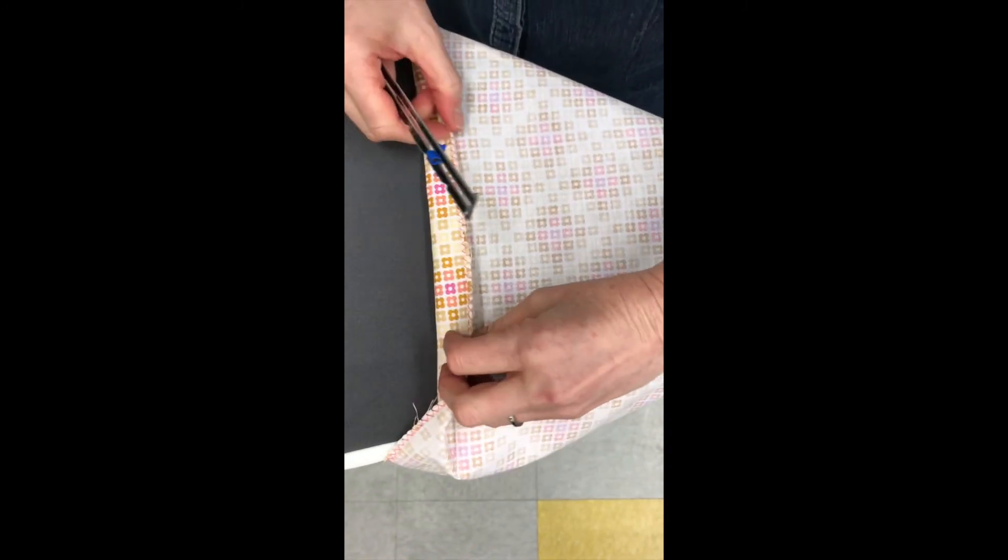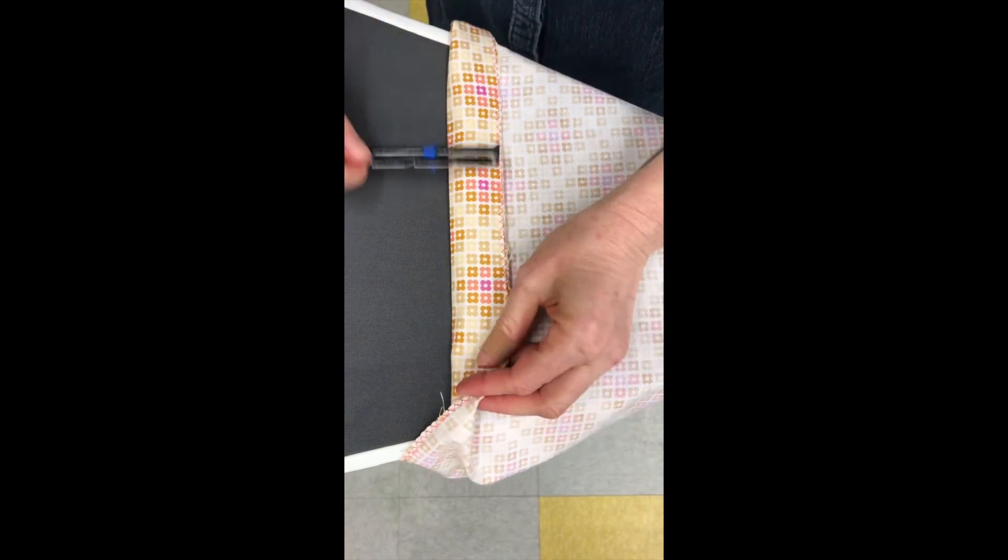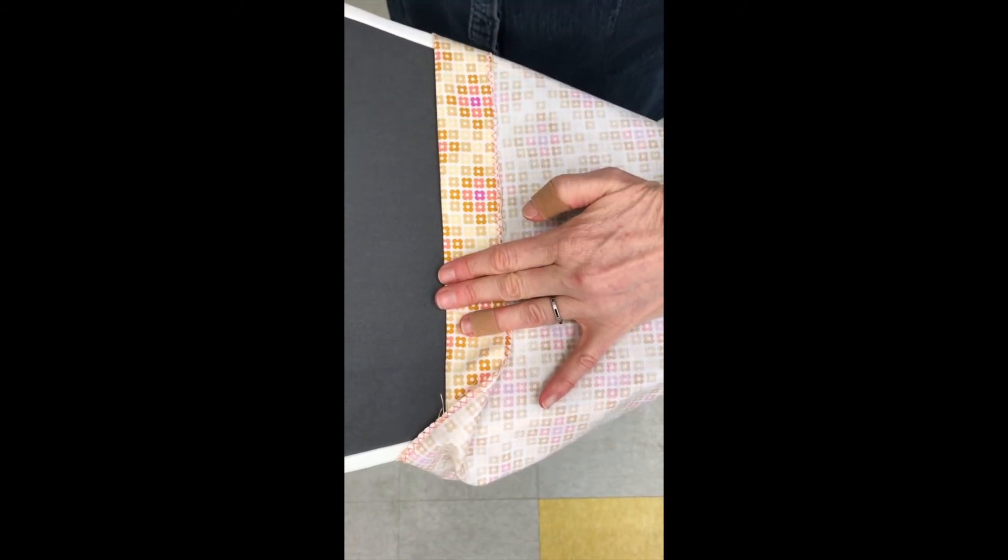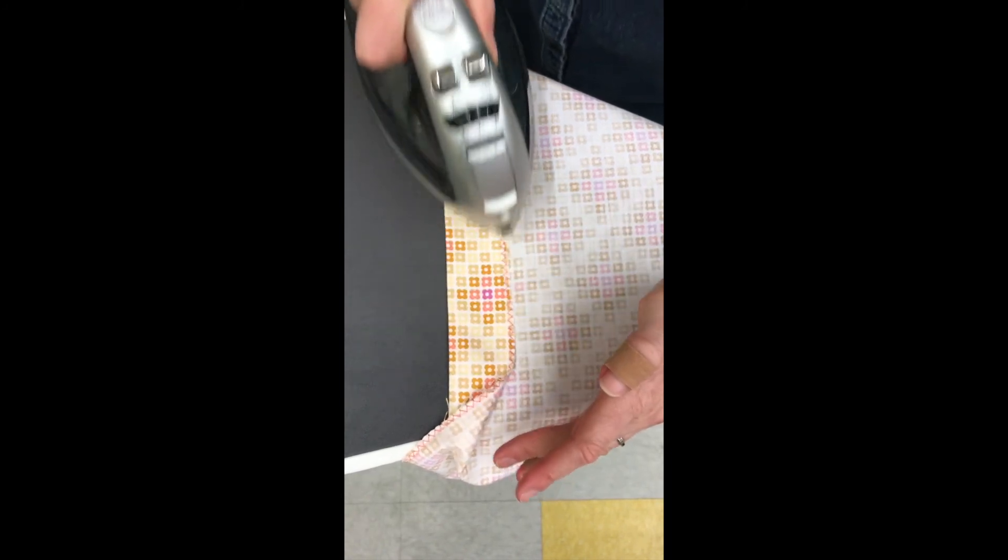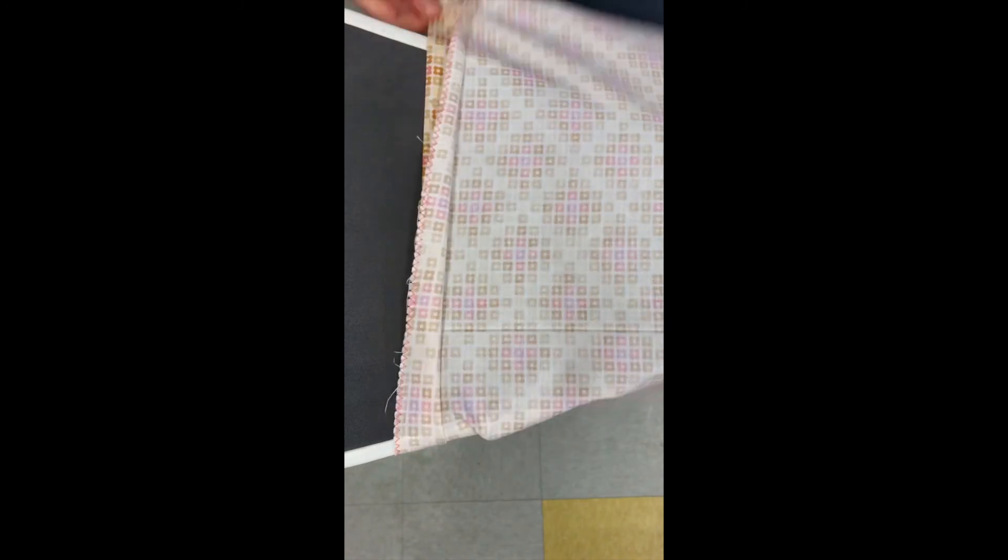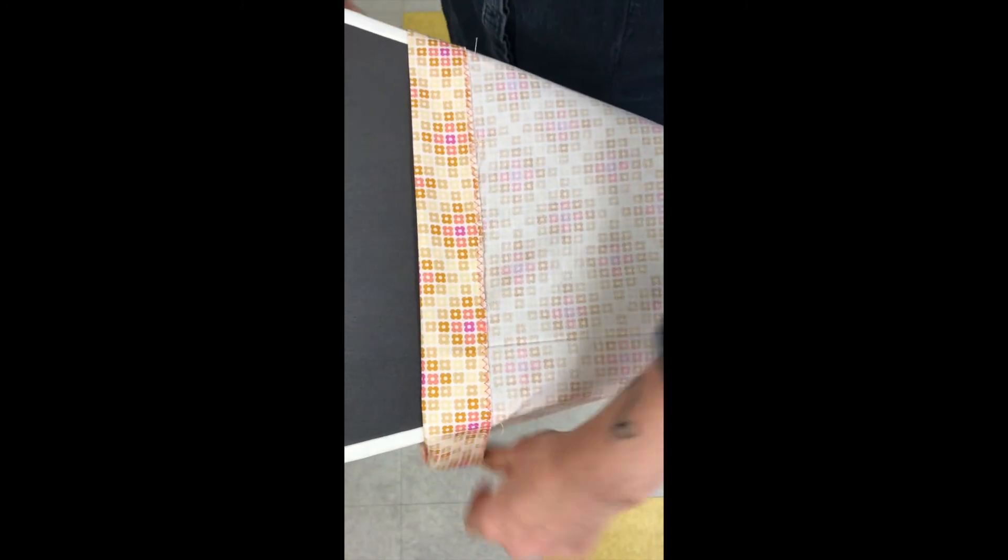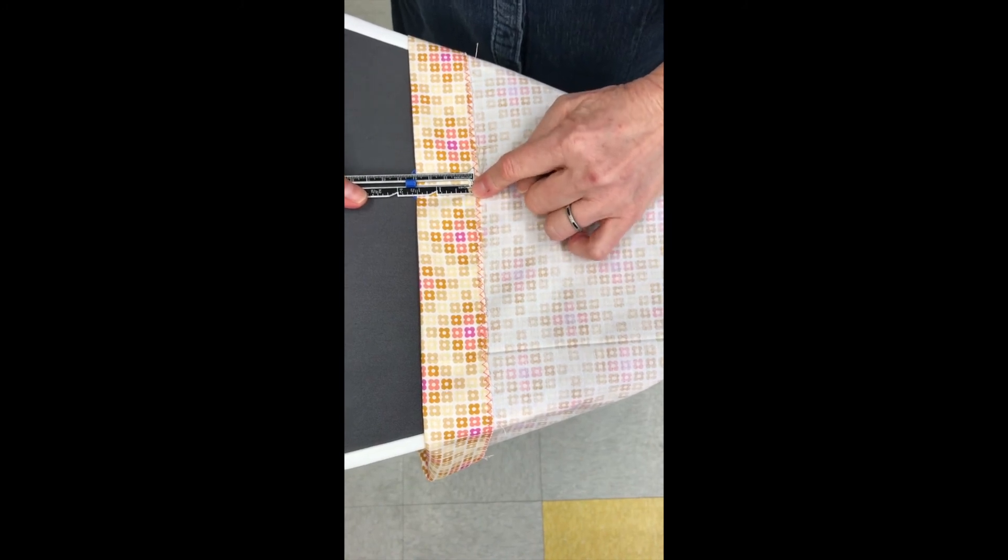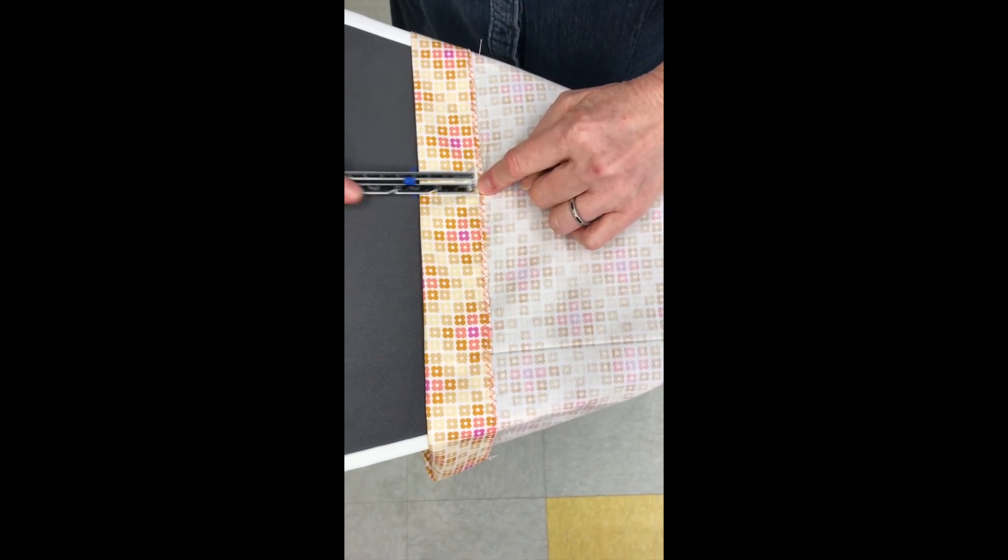So again, I'm going to measure an inch and a half, and I'm going to press, and I'm going to spin. And I'm going to measure press spin all the way around that top edge so that that fold measures at an inch and a half.